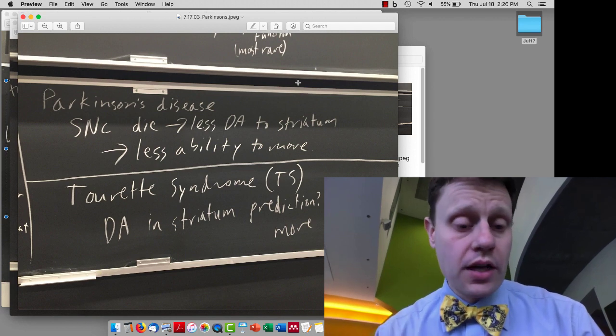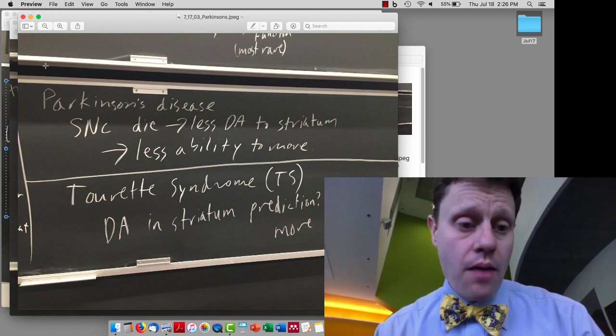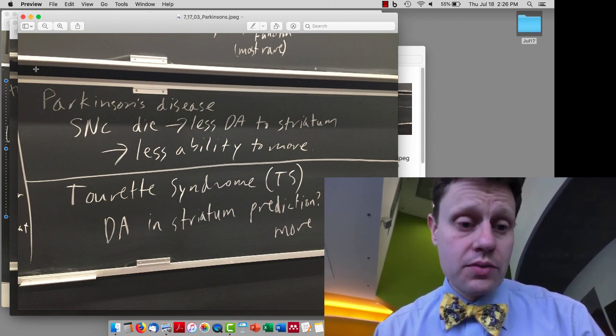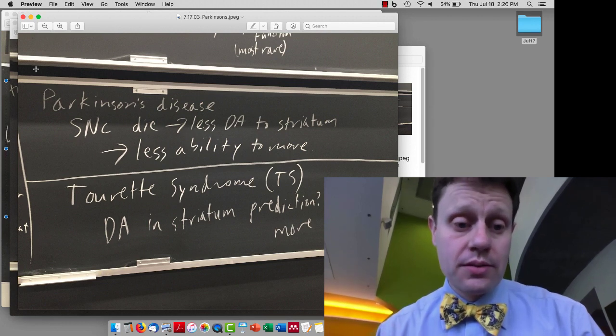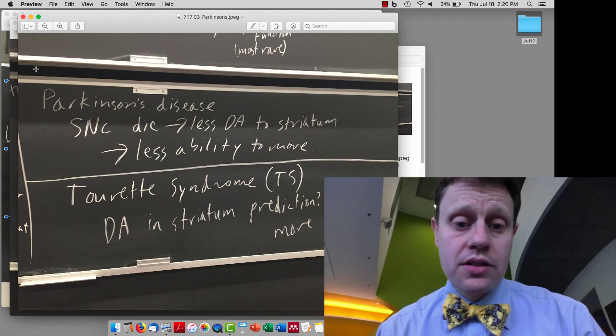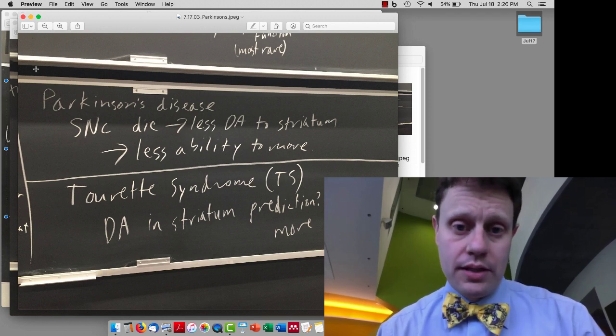I then briefly talked about Parkinson's disease. In Parkinson's disease, what happens is there's less dopamine produced in the substantia nigra. Actually, a lot of the dopamine-producing cells die, and as a result, there's decreased ability to move.